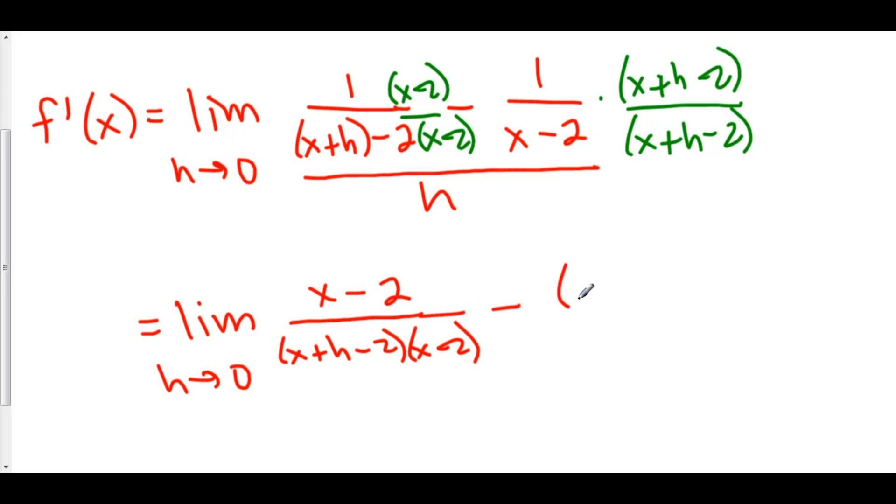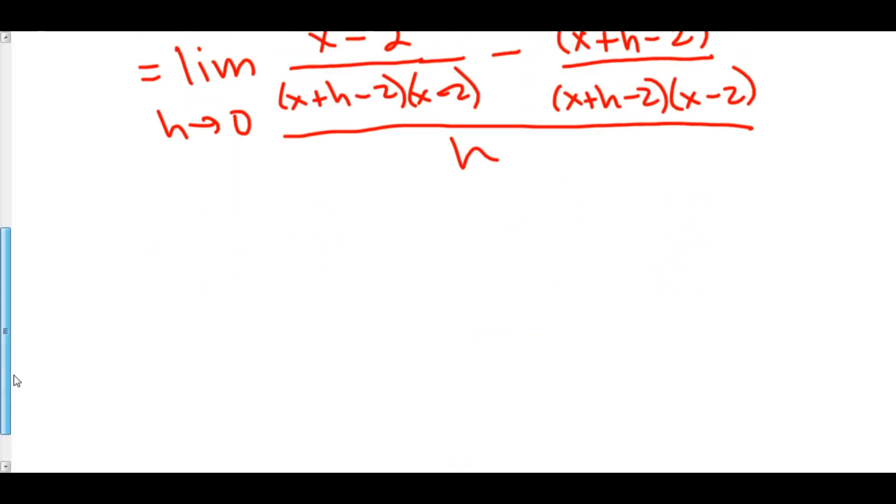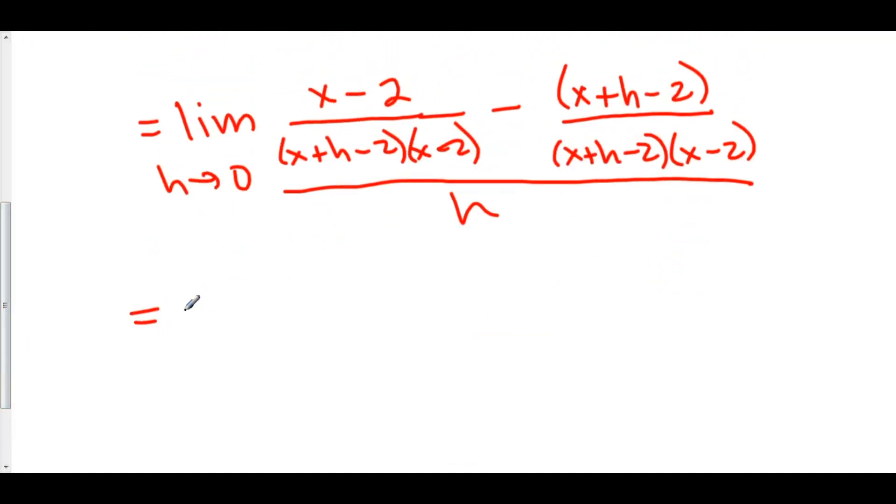Now I can subtract my fractions. And in doing so, I have to remember to distribute this negative to the entire numerator, minus x plus h minus 2 over x plus h minus 2 times x minus 2, and this is all over h. I have to remember to distribute this negative to the entire numerator of my second fraction. That's extremely important, and many people often mistake that.